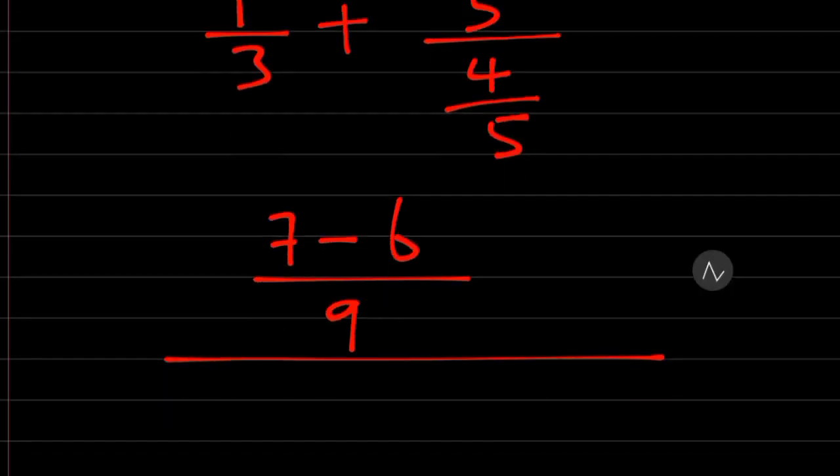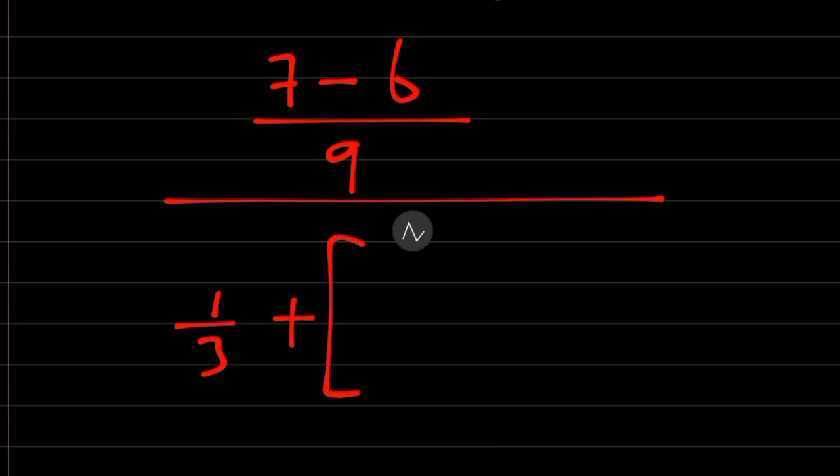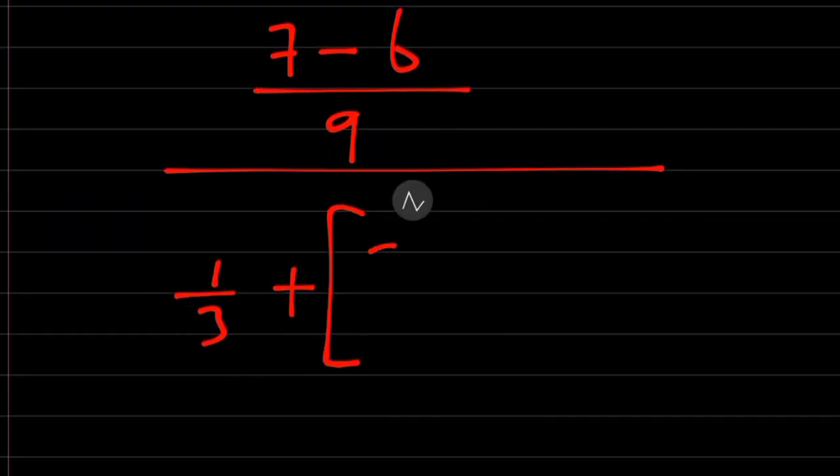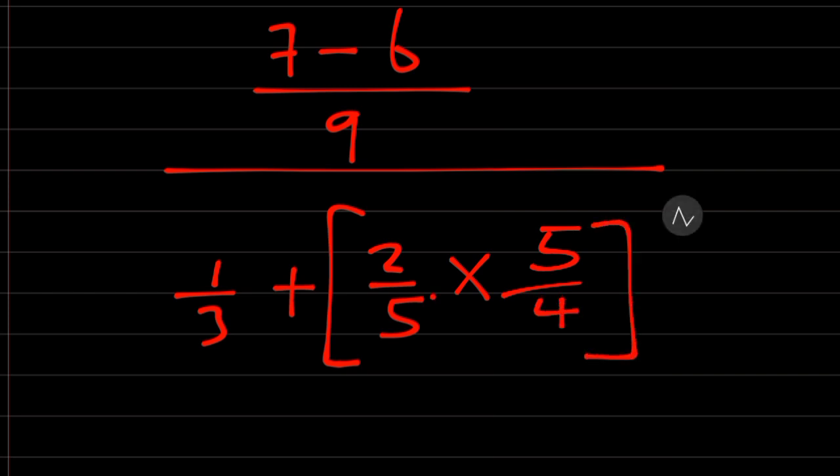All over 1/3 plus, let's open the bracket here. 2/5 divided by 4/5. When we change this division sign to multiplication, we get 2/5 times 5/4.